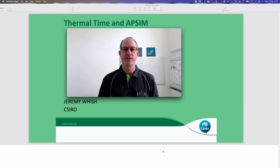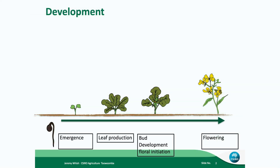G'day, I'm Jeremy Wish and today we're going to talk about thermal time and action. The development of many organisms can be measured as a function of temperature. This notion isn't new — it was documented in the middle of the 18th century and this concept underpins many simulation models. Basically, the cooler the temperatures, the slower the rate of development of both insects and plants, making development a function of temperature.